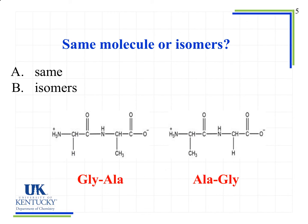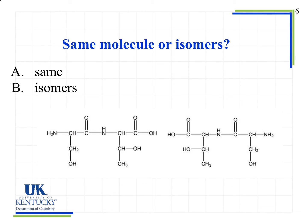If we look at the names of these, the first is glycine-alanine — we start naming at the N-terminus, so the first group is glycine and the second group is alanine. The second molecule starts again at the N-terminus: the first group is alanine and the second group is glycine. These have different names and they are in fact isomers of one another.